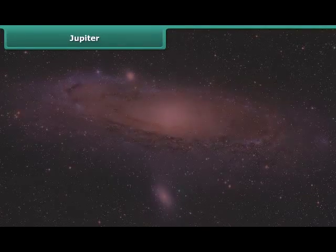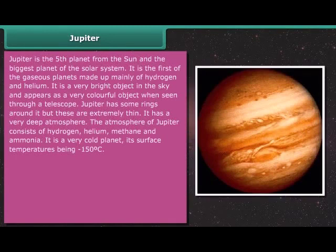Jupiter is the fifth planet from the Sun and the biggest planet of the solar system. It is the first of the gaseous planets made up mainly of hydrogen and helium. It is a very bright object in the sky and appears as a very colorful object when seen through a telescope. Jupiter has some rings around it, but these are extremely thin.